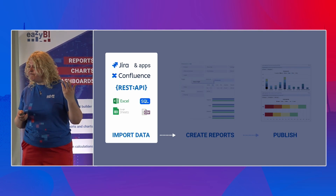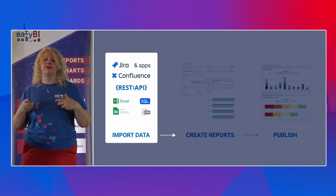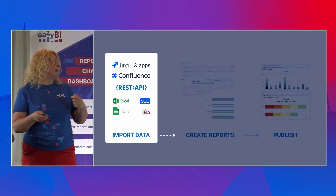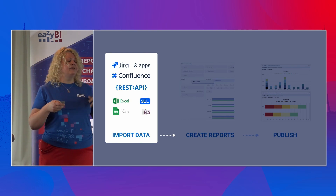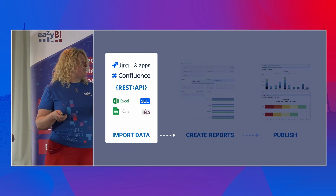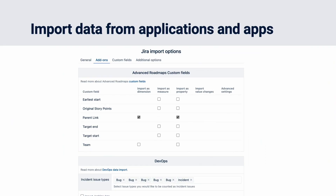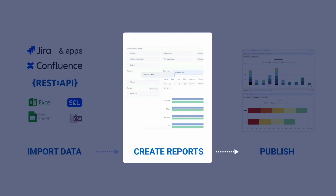You all know there are three main steps in the EZBI process: import data, create reports, and publish them. And it's no different for integrated data. First, you import data from apps through Jira import options — just select custom fields or the app itself and run the data import. During that, you will get dimensions and measures. When you create reports, all the features are there: the same report builder, the same options to build different charts and reports, and standard calculations.